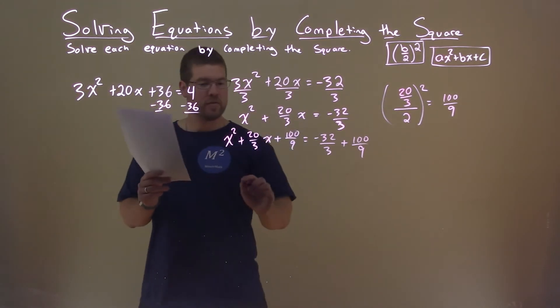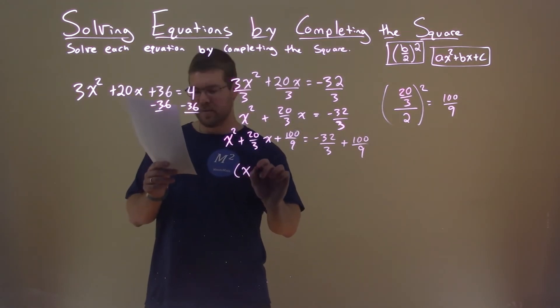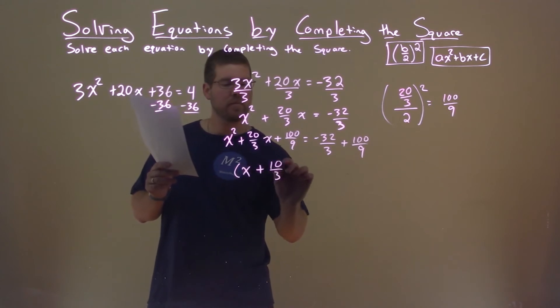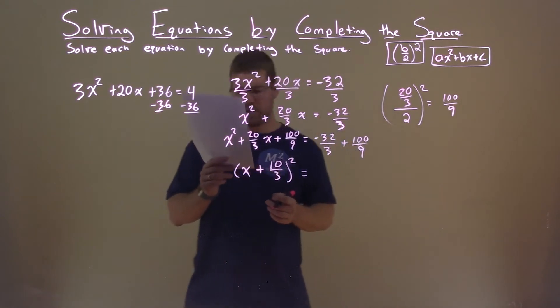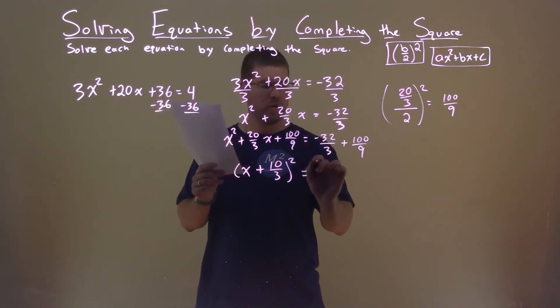The left-hand side is a perfect square, which is x plus 10 over 3, all squared. And on the right-hand side, negative 32 over 3 plus 100 over 9 comes out to be 4 ninths.